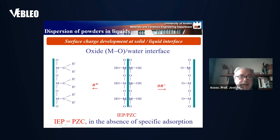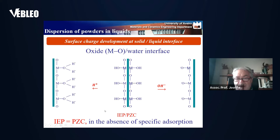If we go to more acidic conditions, we will have positive charges, and the opposite — if you go to more alkaline conditions, you will charge the surface negatively. The isoelectric point and point of zero charge coincide in the absence of specific adsorption. But if specific adsorption occurs, then everything changes, as I will show later.